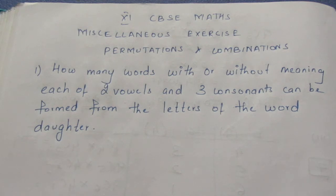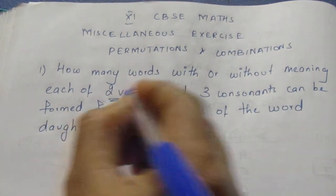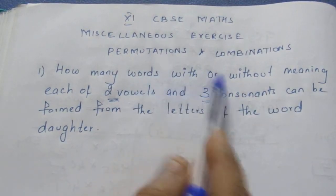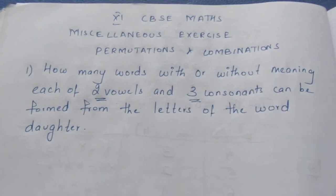Let's see the question: how many words with or without meaning, each of two vowels and three consonants, can be formed from the letters of the word daughter? From daughter we need to select two vowels and three consonants. We are going to form words with or without meaning. This is the condition they have given.